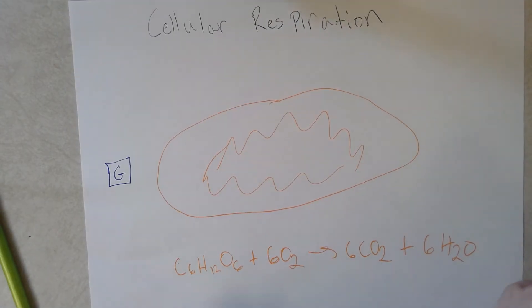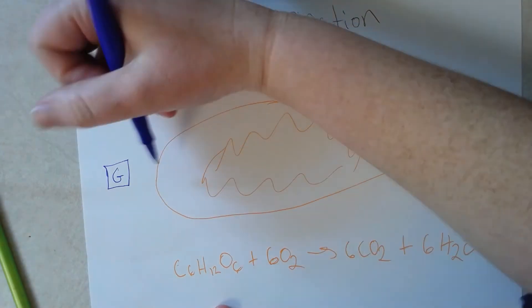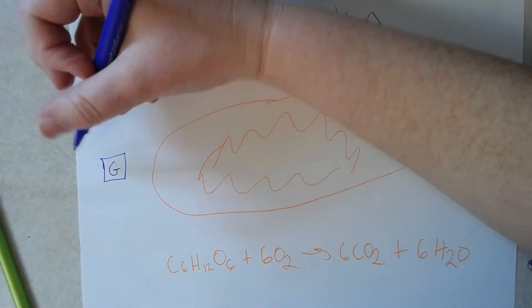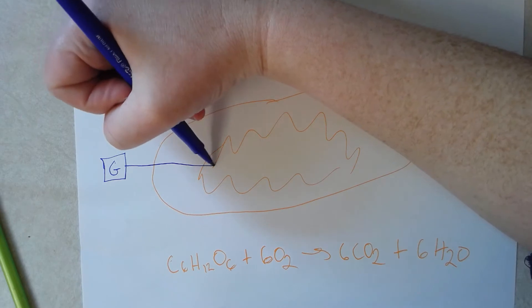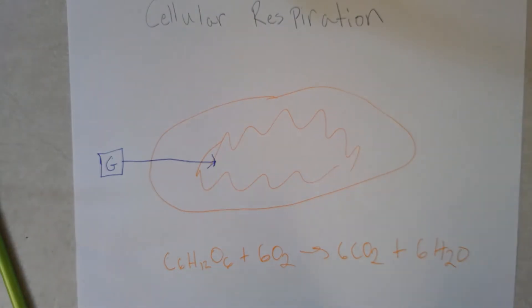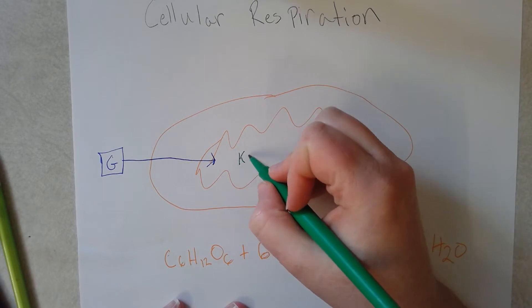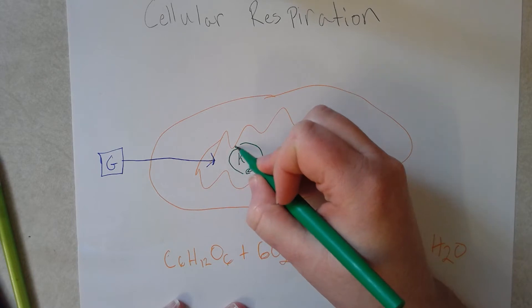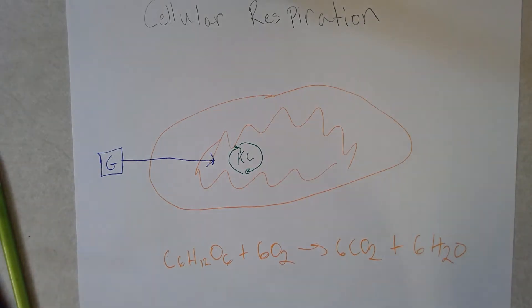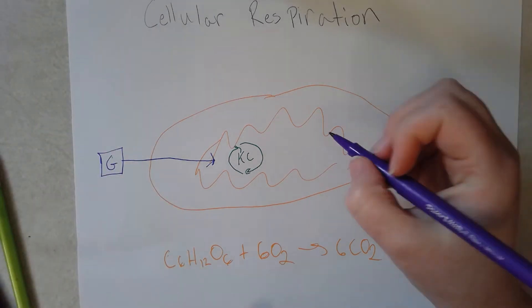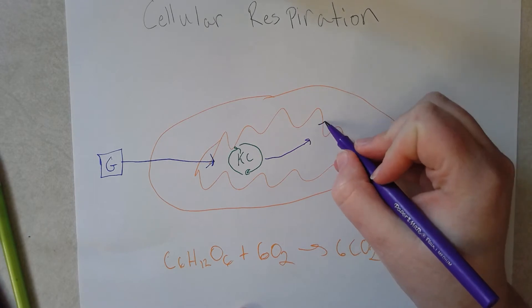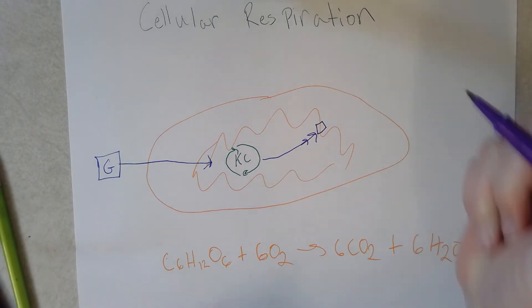And then the products of glycolysis go into the mitochondria where they go through the Krebs cycle, and then the products of that go on to the electron transport chain, which you can find on the membrane right here.